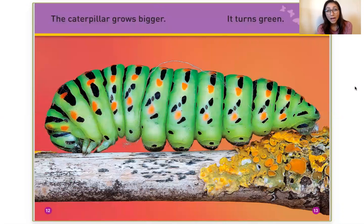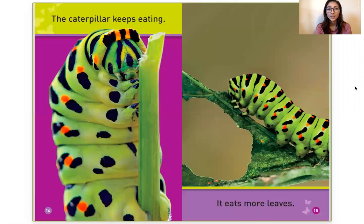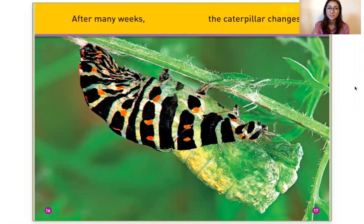The caterpillar grows bigger. It turns green. The caterpillar keeps eating. It eats more leaves. After many weeks, the caterpillar changes.